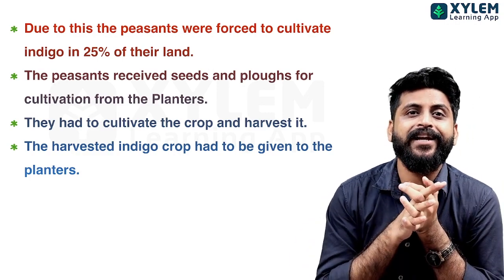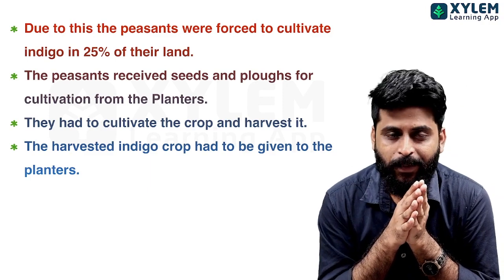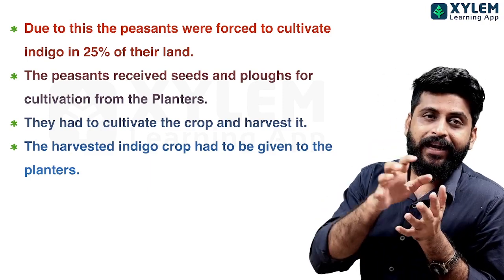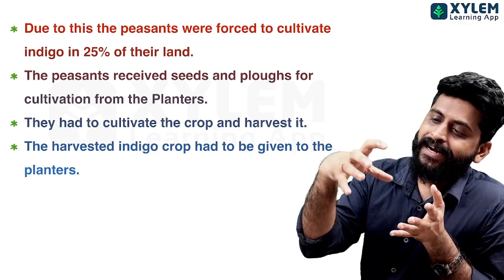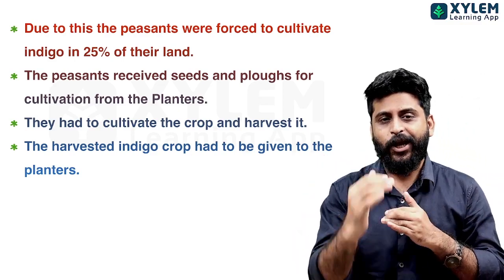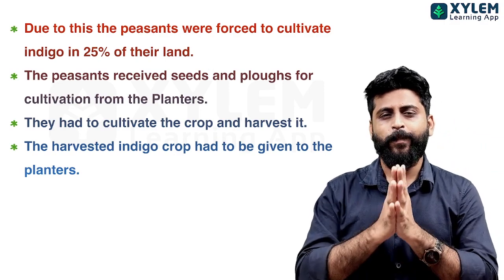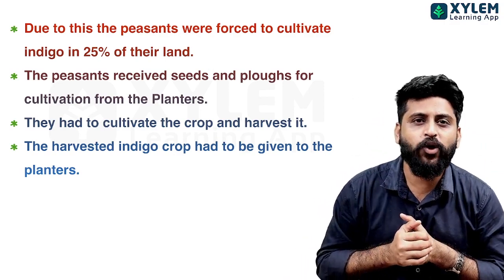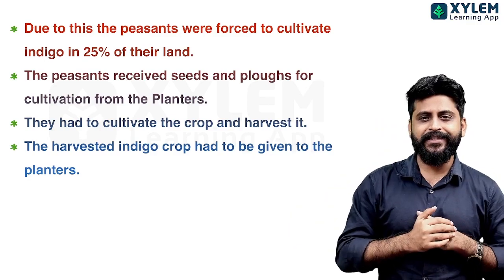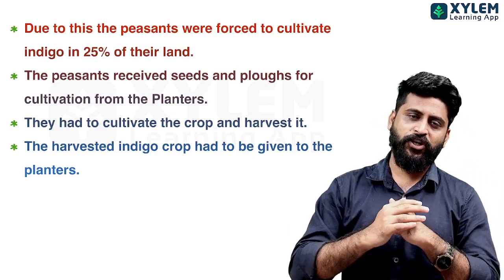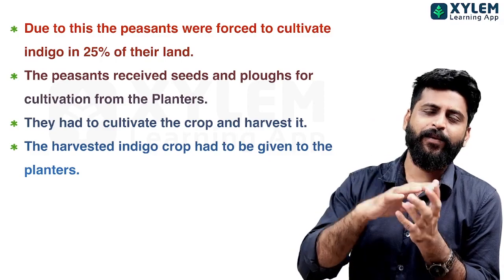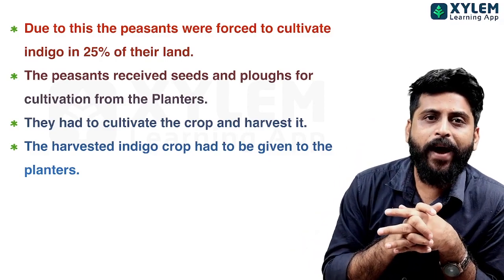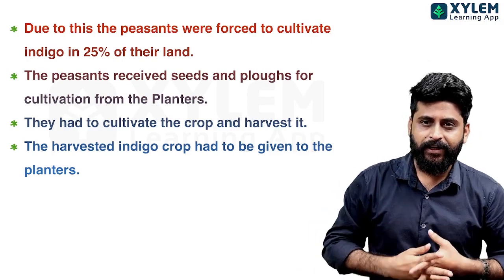The peasants received seeds and plows for cultivation from the planters. They had to cultivate the crop and harvest it. Then the harvested indigo crop had to be delivered to the planters.